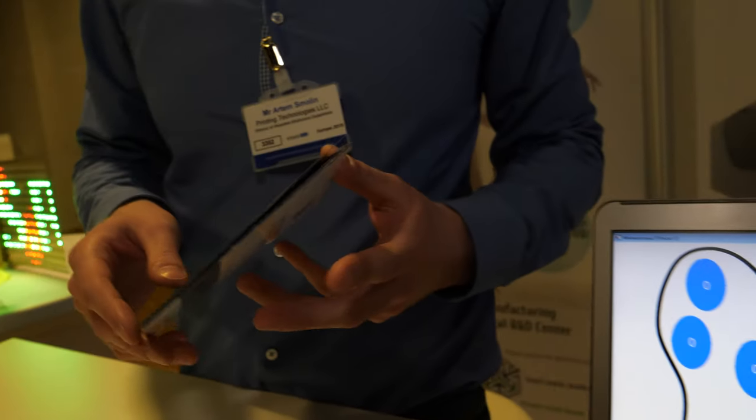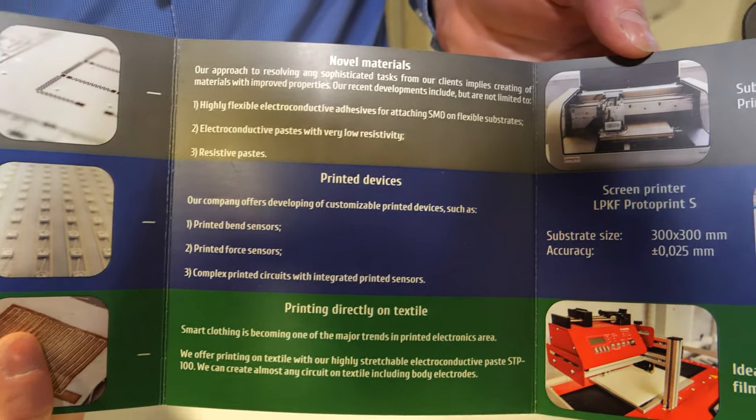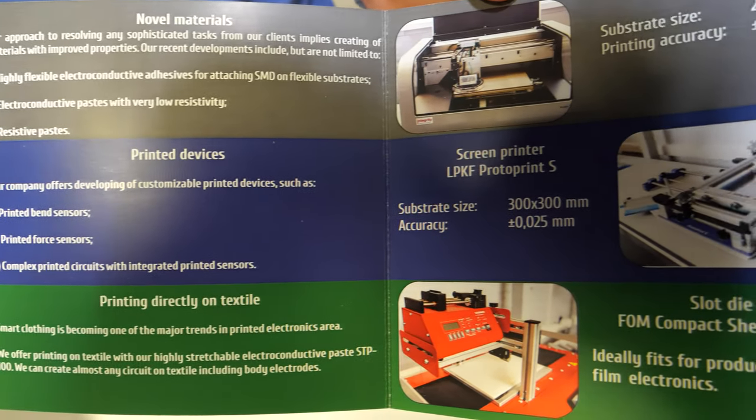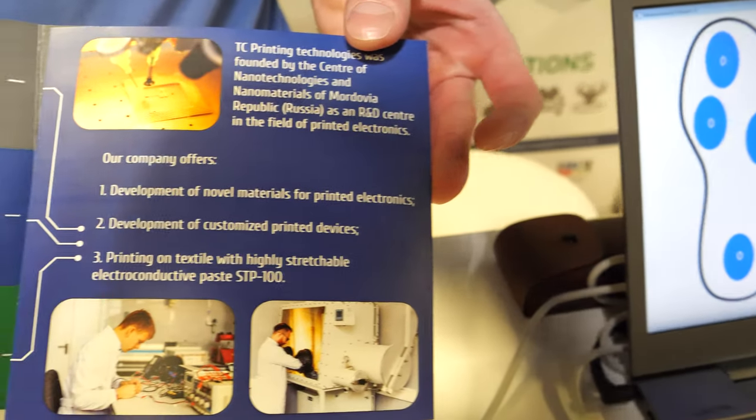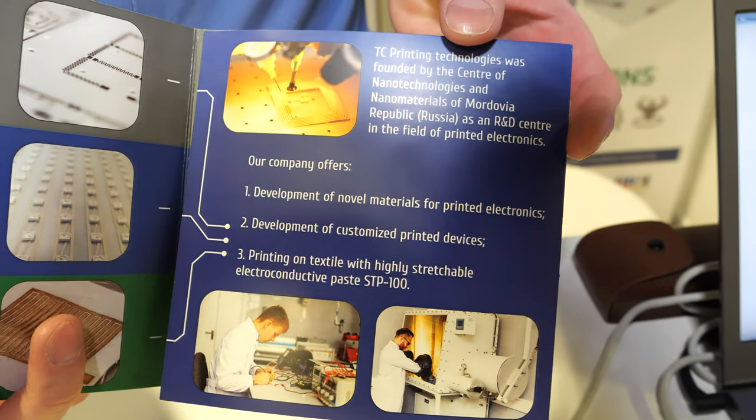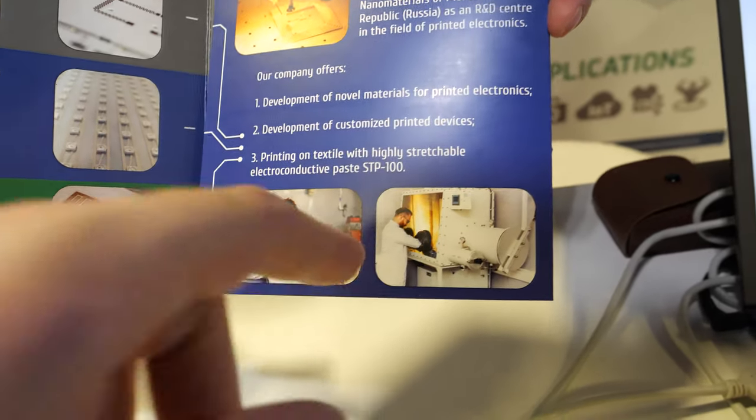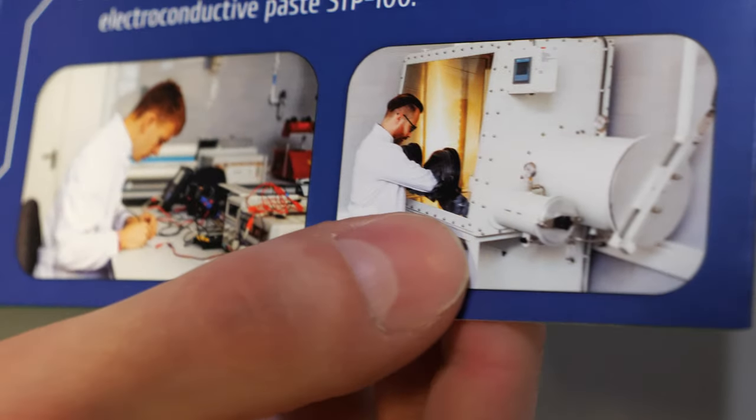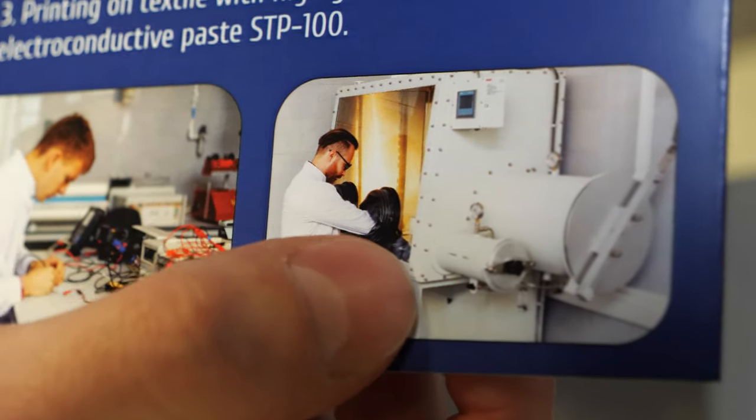We have a laboratory. I can show you. Here we have different kinds of machines: screen printer, slot die machine, inkjet printer, etc. Analytical equipment. And we can print almost any layout. What's going on here? Here is a glove box. We can print in a non-oxygen atmosphere.